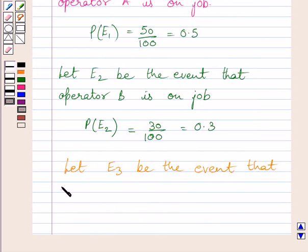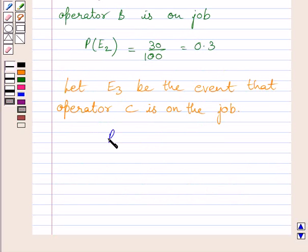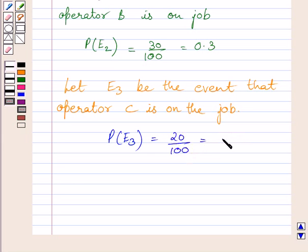Let E3 be the event that operator C is on the job. Probability of E3 equals 20/100, which equals 0.2. We are given that operator C remains on the job for 20% of the time.